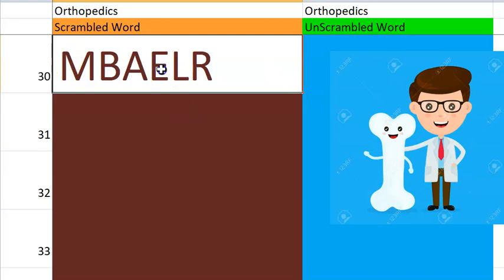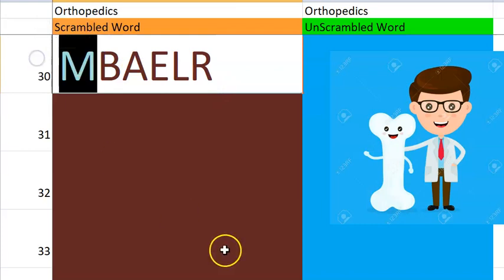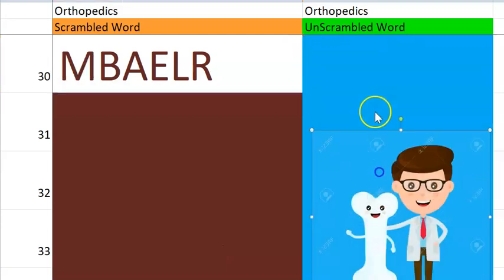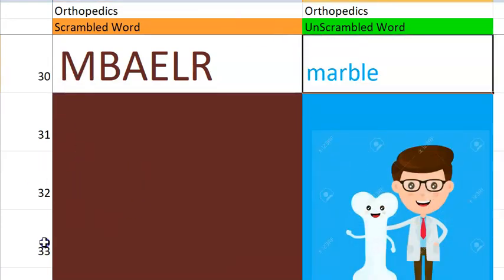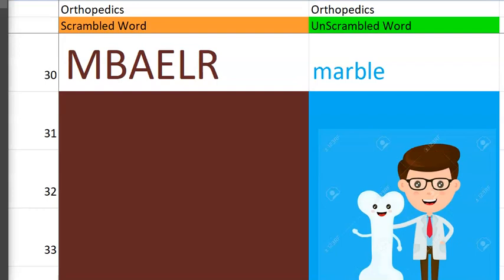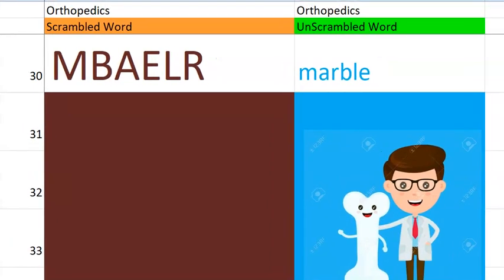Now let us go to the 30th one. Starting letter M — you play with those things and put them as tiles in your house. Marble. But why is marble in orthopedics? There is something called marble bone disease. That is why it appears in orthopedics. Marble bone disease is another word for osteopetrosis.